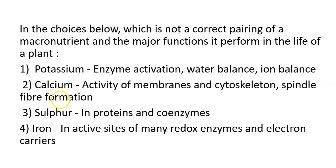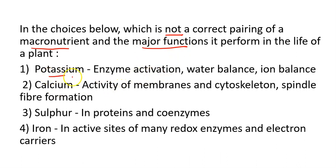We have another question from mineral nutrition. One important question: which of the following is not a correct pairing of a macronutrient and the major function it performs in the life of a plant? We have 4 options: potassium — enzyme activation, water balance, and ion balance; activity of membranes and cytoskeleton, spindle fiber formation; sulfur — in proteins and co-enzymes; iron — in active sites of many redox enzymes and electron carriers.